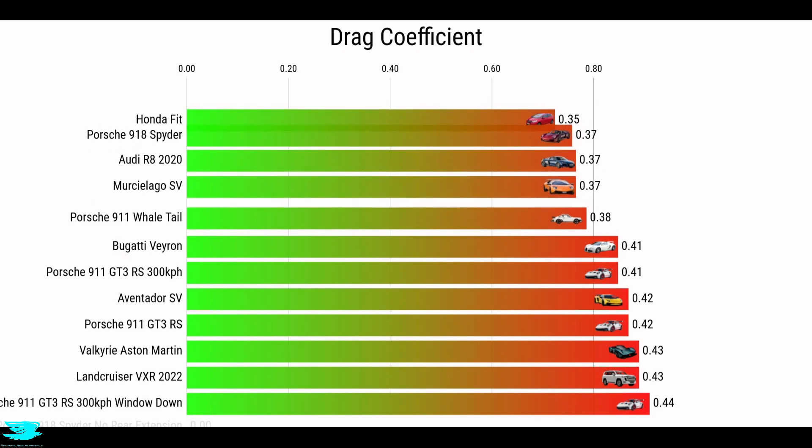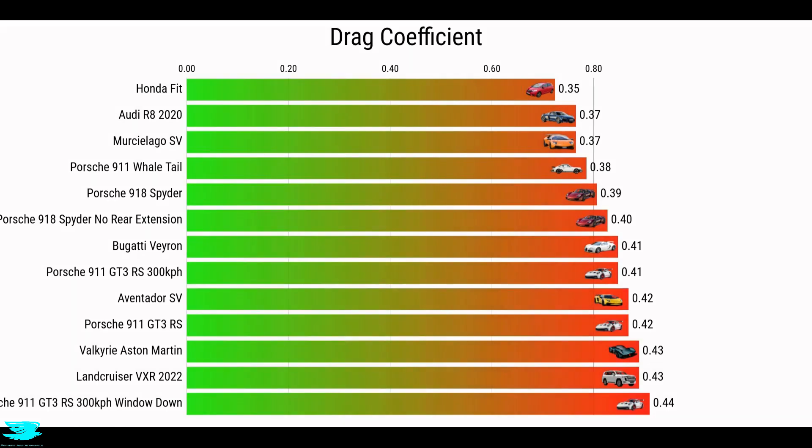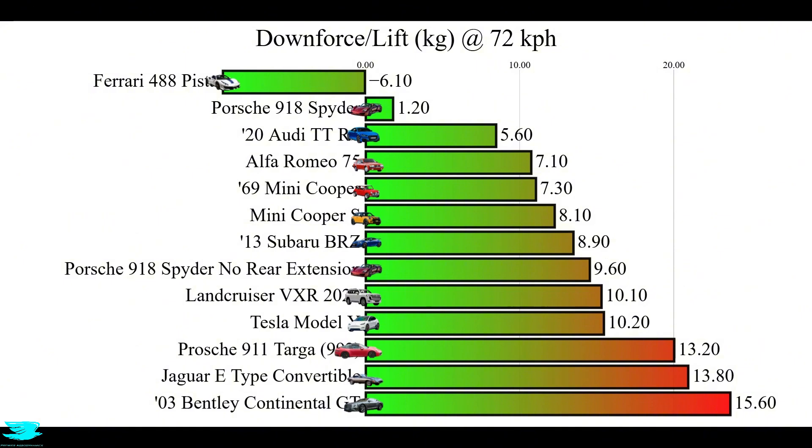And the regular car's drag coefficient is 0.39, and removing the rear edge extensions increase that to 0.40. Both values are pretty okay though. With the rear extension, the lift is almost nothing, but removing it jacks it up to 9.6 kilos. So the rear extension is really helping the diffuser and the rear of the car reduce downforce. Peace out, amigos.